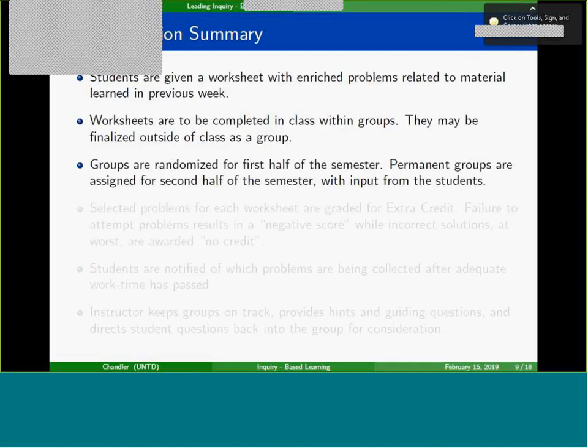I randomize groups for the first half and make permanent groups after. I do take input but I do not let students pick their own groups — it just doesn't work in my opinion and I've had some pretty bad results. Groups of three to five; four is the ideal number.